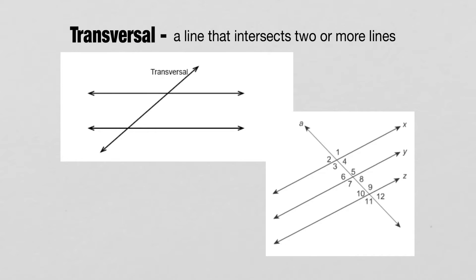A transversal is a line that intersects two or more lines. I want to really highlight the fact that the definition is two or more. Most of the time you'll see it crossing just two lines, but it can be more — 3, 4, 5, 10, 20 lines. It's a line that crosses and intersects other lines.